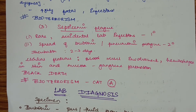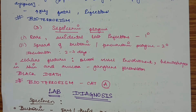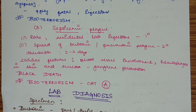Septicemic plague is rare, and may be primary or secondary. Primary septicemic plague is very rare and is transmitted only by accidental lab infection, generally found in labs only. Secondary infection is by spread of bubonic plague or pneumonic plague.